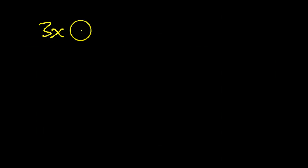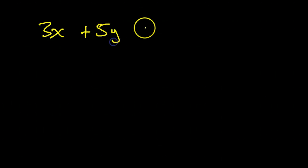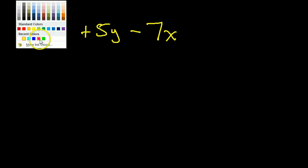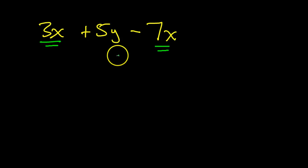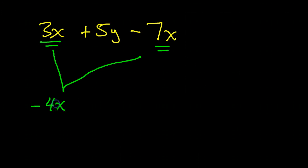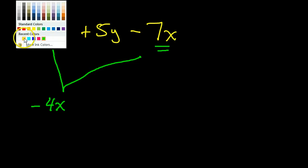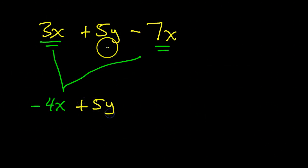If I have 3x plus 5y minus 7x, for example, I'm hoping at this point when you look at an expression like this, you say to yourself, wait a minute, these are like terms, the x's are like terms. But the y is not, it does not have any like terms. So positive 3x and negative 7x, if you put those together, that makes negative 4x, and then you just have your 5y that just comes straight down. So that's combining like terms.